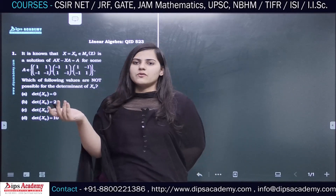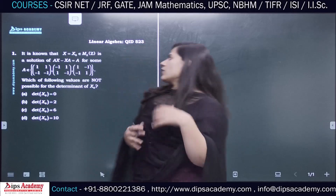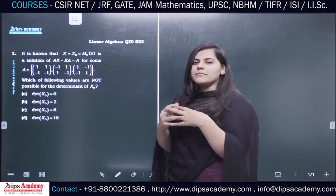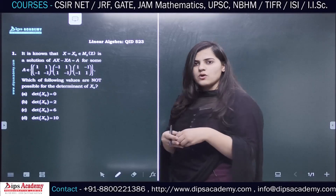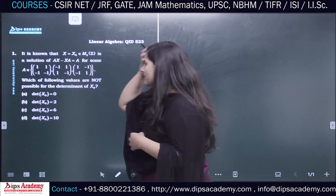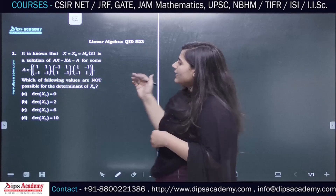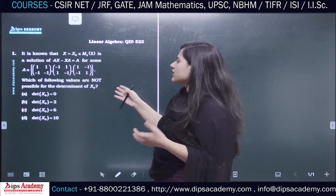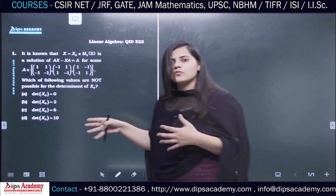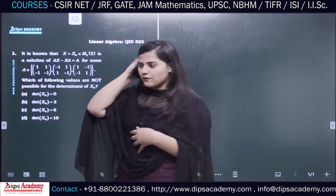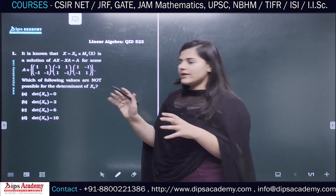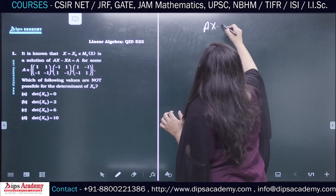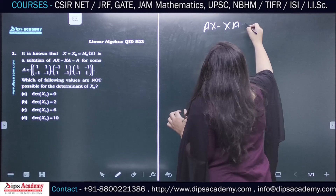The first question we are going to discuss is a question of linear algebra. In this question we have to find the determinant of a matrix X₀ which is a solution of the equation X minus XA equals 2A. Also, A is not given directly — we have to determine which one of the three given matrices is our required A. We have to utilize just this one condition: X minus XA equals 2A.